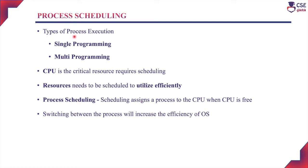There are two types of process execution: single programming and multi-programming. In a single programming environment, a job is picked from the job pool and assigned to the CPU for execution. Once one job is assigned to the CPU, till it completes its total execution and gets terminated, no other job will be assigned to the CPU.